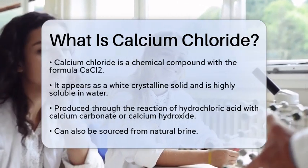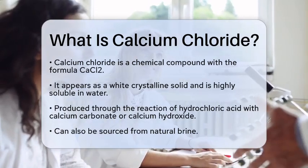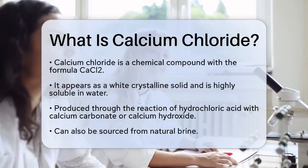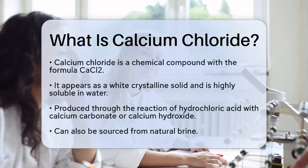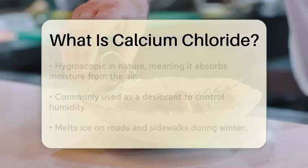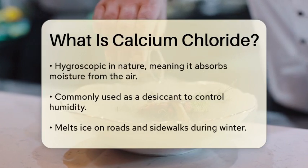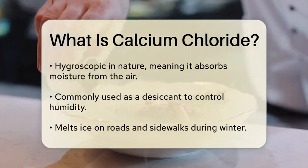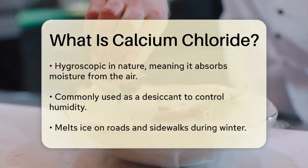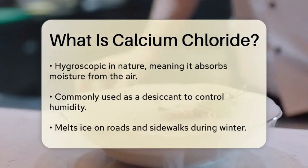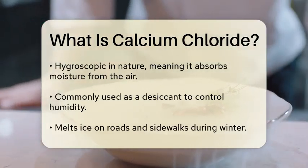Calcium chloride is commonly produced through the reaction of hydrochloric acid with calcium carbonate or calcium hydroxide. It can also be obtained from natural brine sources. This compound is hygroscopic, meaning it can absorb moisture from the air, which is why it is often used as a desiccant to control humidity in various environments.